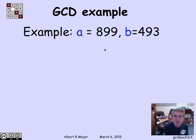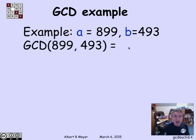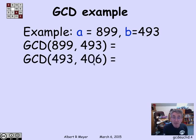The remainder lemma now gives us a very lovely way to compute the GCD. Here's an example. Suppose I want to compute the GCD of 899 and 493. So I want this GCD, 899 and 493. According to the remainder lemma, if I divide 899 by 493, I get a quotient of 1 and a remainder of 406.